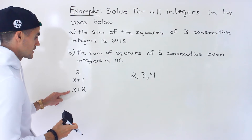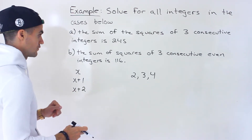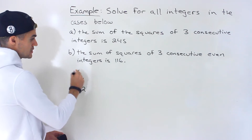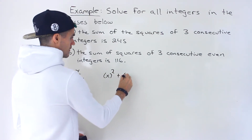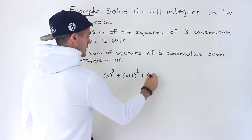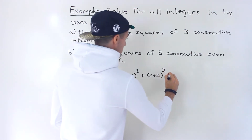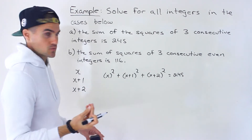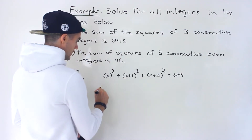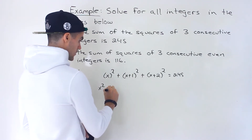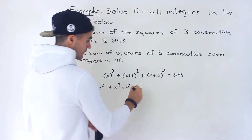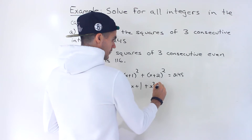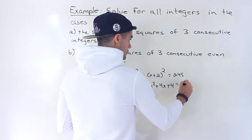We're told that the sum of the squares of these is 245, meaning we take each of these and square them, then sum them up to get 245. Now we have an equation with just one variable. Expanding everything: x squared; x plus 1 squared gives x squared plus 2x plus 1; and x plus 2 squared gives x squared plus 4x plus 4, all equaling 245.